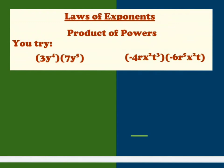So for this product of a power problem, we're going to multiply the 3 and the 7 to give us 21. And then we have multiplication of like bases, so we are going to add our exponents. So we have 4 here and 5 here, so that gives us a total of 9. So that would be my answer for that one.